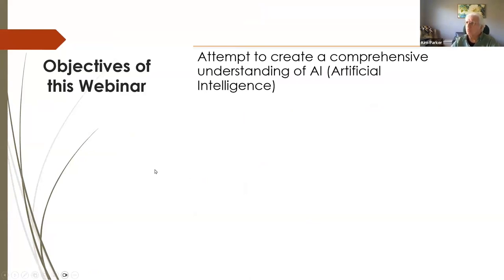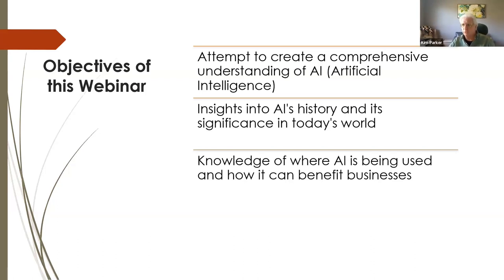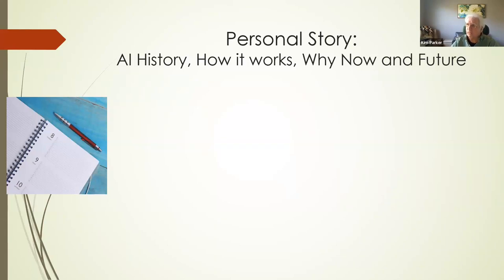One of the things we're going to attempt is a comprehensive understanding of AI — and there are a few words that come to mind, and one of them is data, data, data. We're going to give some insights into AI's history, talk about where AI has been used and where it can benefit the business, look into some possibilities of where AI is going, how it's going to impact the workforce, and what are the limitations of AI. I wanted to share a little bit about my personal story, because it says a lot about where AI has come from.